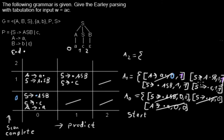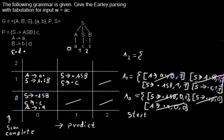I should mention that when processing an item from the agenda in the complete step, you can combine it with any item from the chart you've already created. The agenda just prevents you from eternally trying out new possibilities. I've processed this item so I throw it out.